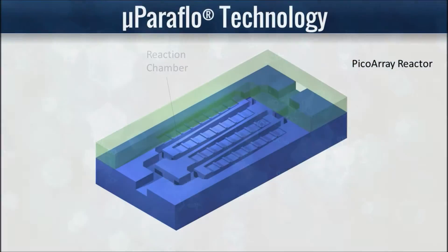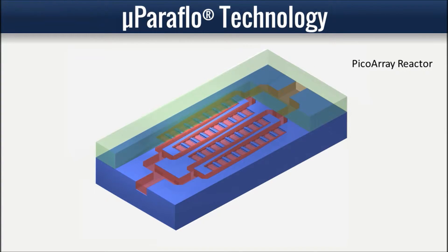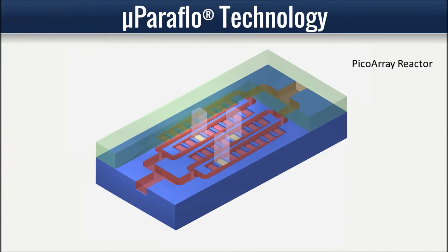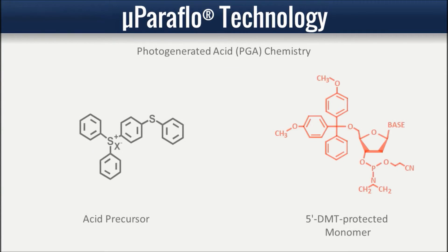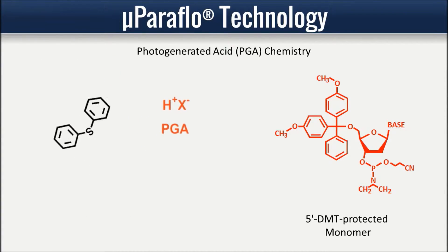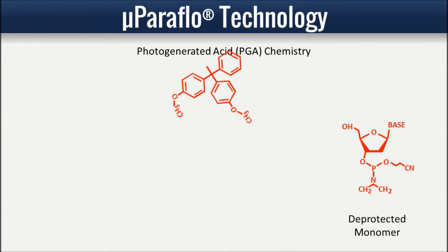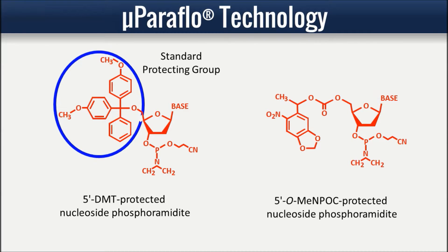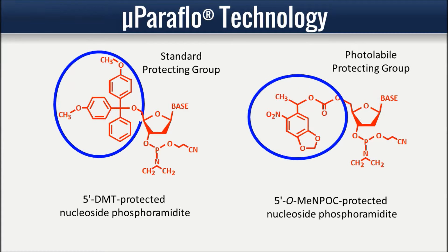A PGA precursor is fed into the microfluidic chamber prior to the light irradiation step to create the acid, which removes the acid-labile DMT protecting group. This process is simple in that it does not require an electrochemical surface or specialty monomers with photo-labile protecting groups. This approach is very flexible because virtually any modified monomer can be used, creating a wide array of non-regular oligos.